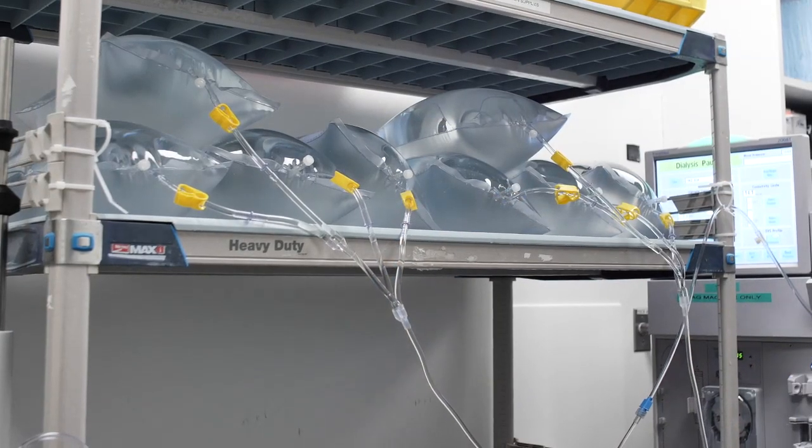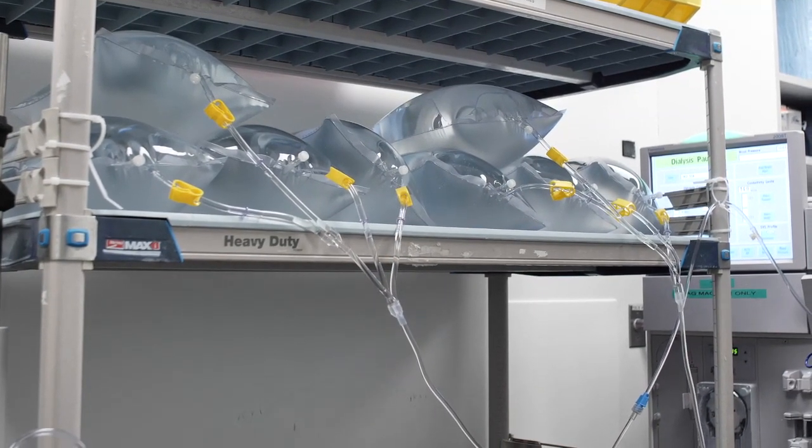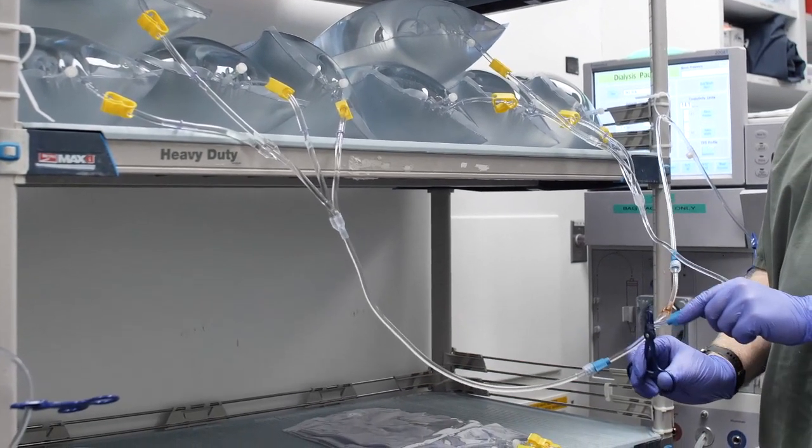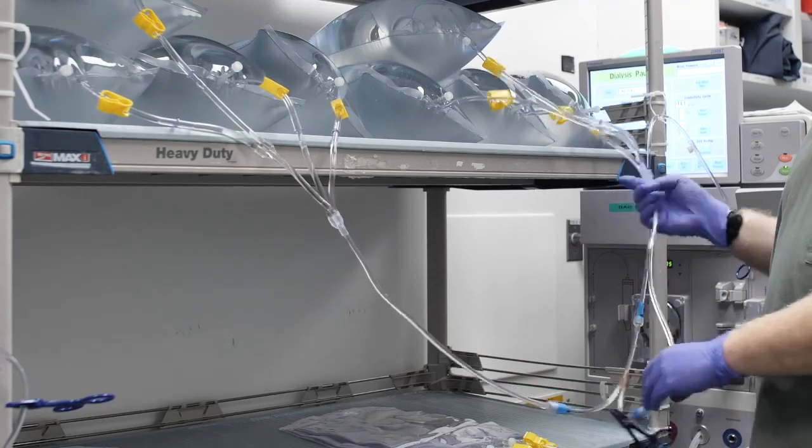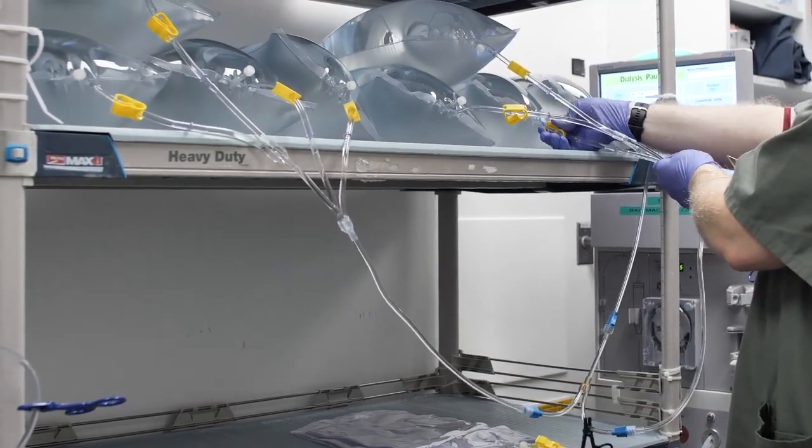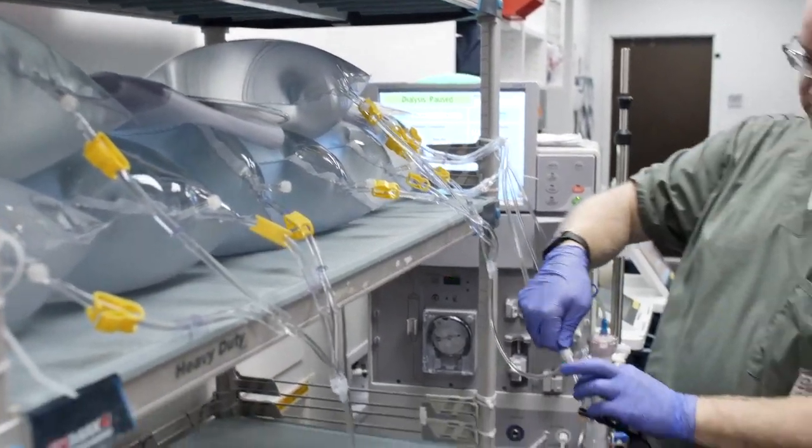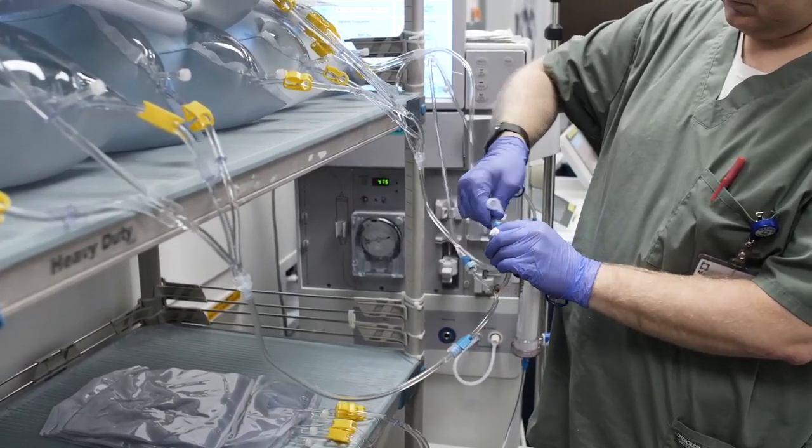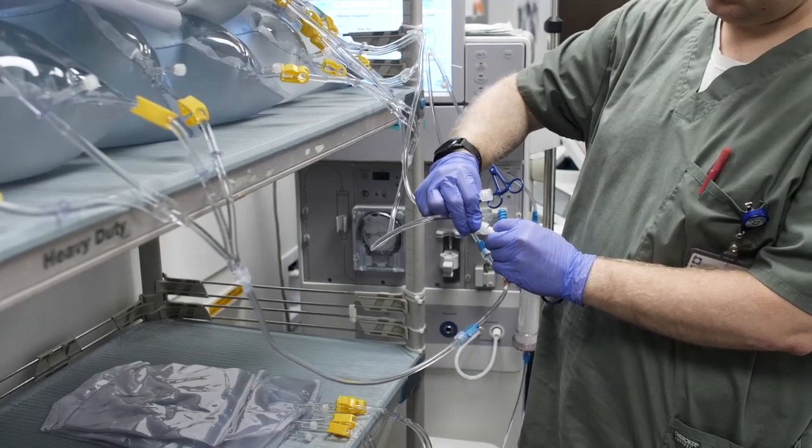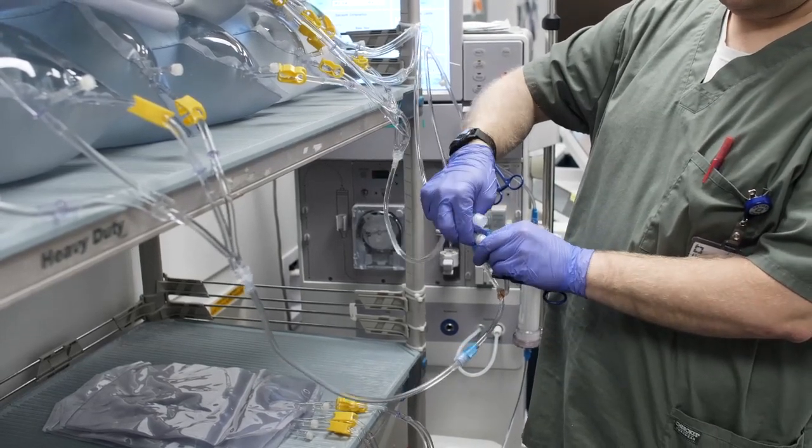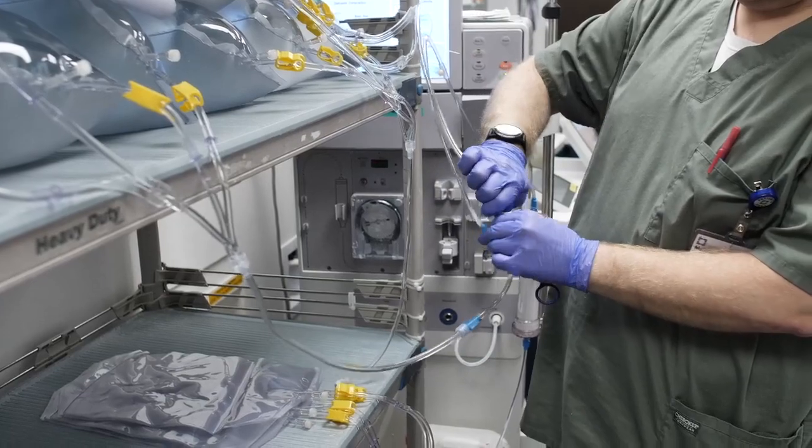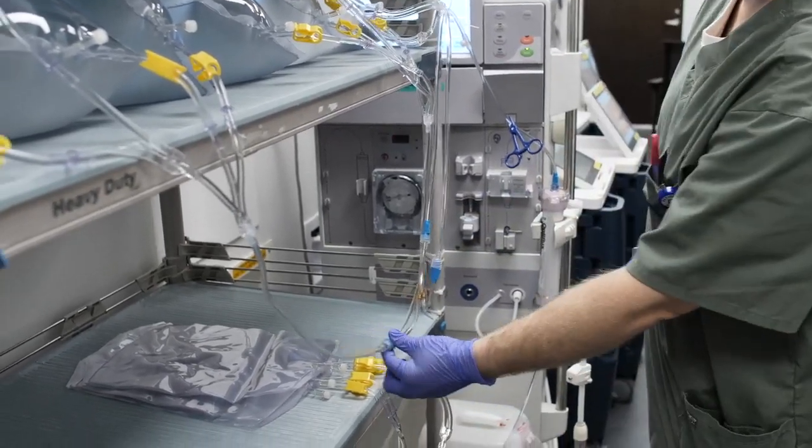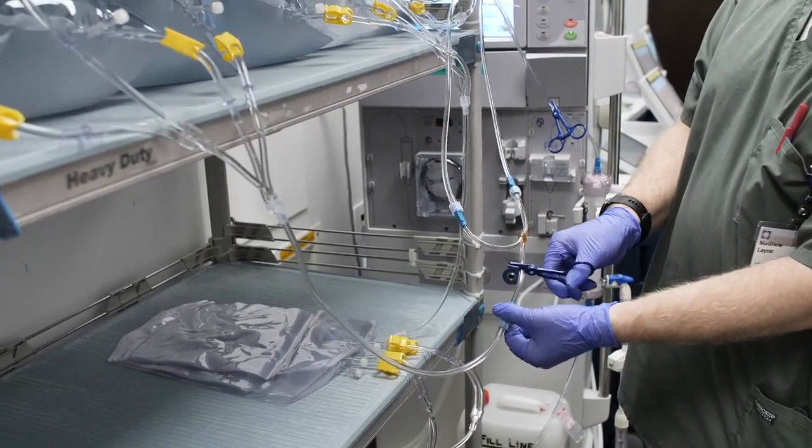Step 19: When the bags are full, place a hemostat on one of the segments on the splitter line. Then close the clamps on the bags of that line. Using aseptic technique, undo the full bags and then take the cap off the new bags and place it on the full bags. Then connect the empty bags to the line and undo the hemostat. Repeat the process for the other line.